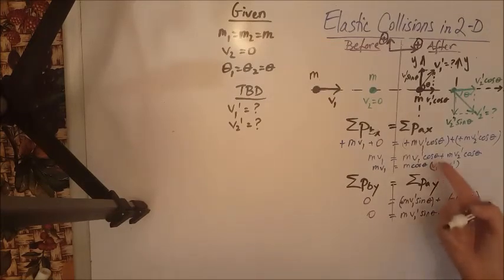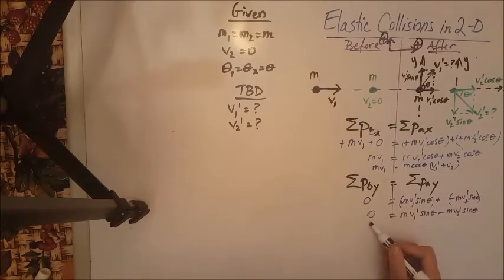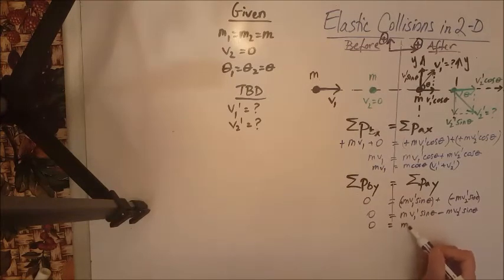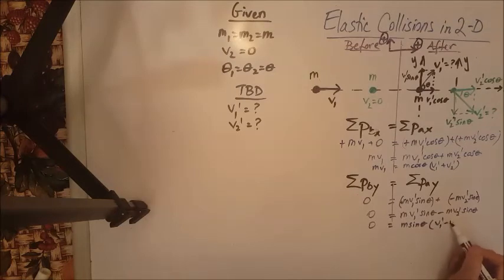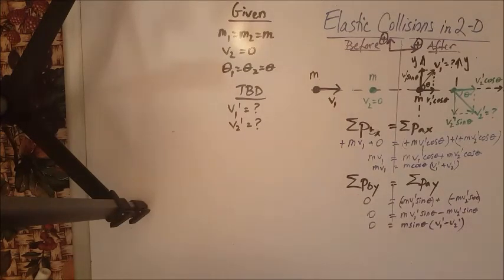We can do the same thing as we did over here. To further simplify this, we get zero equals M sine theta open parenthesis V1 prime minus V2 prime. So now we have these two equations, this one in blue, this one in purple. And we need to calculate V1 prime and V2 prime.